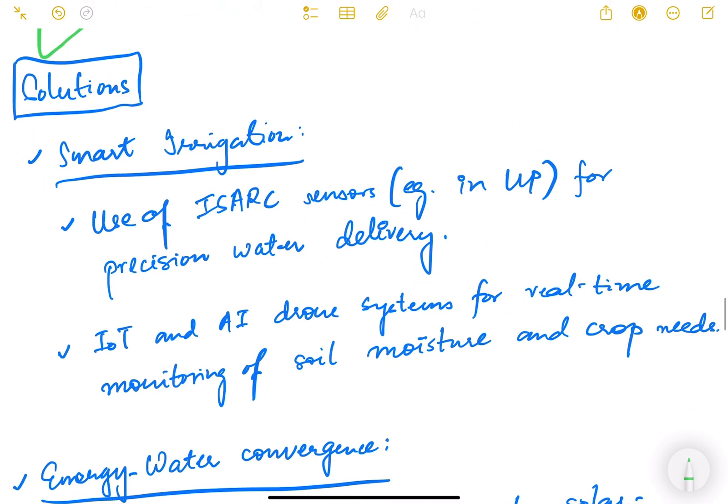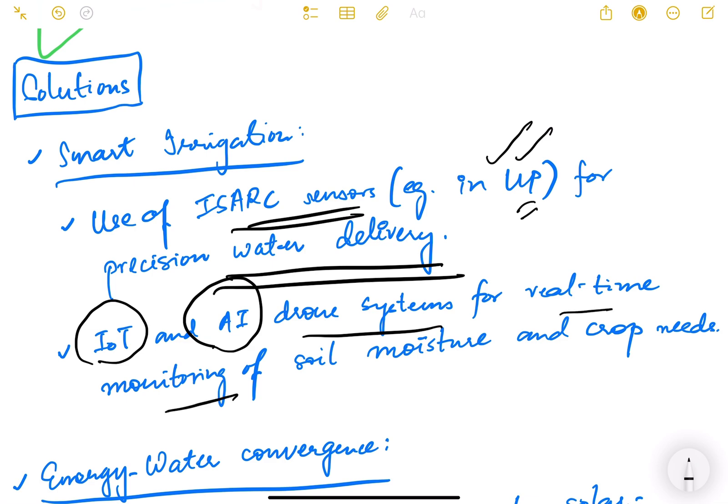What are some of the potential solutions to these challenges? The first one is smart irrigation. Use of sensors, ISARC sensors which is already tried in UP for precision water delivery, internet of things, AI driven systems for real time monitoring of soil moisture and crop needs. These are some modern technologies which can be used for irrigation. However the implementation and adoption is very limited because of several constraints.